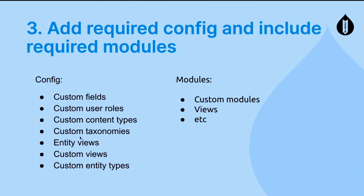While creating tests, we need the required config and modules. Whatever we include is what's available when the test runs — if we don't include something, it will error out. Tests begin with a basic Drupal install only and everything else must be added. Config needed for a page must be in the config install directory of a module that gets loaded. We must also exclude config already supplied by the basic Drupal install, such as anonymous and authenticated roles.